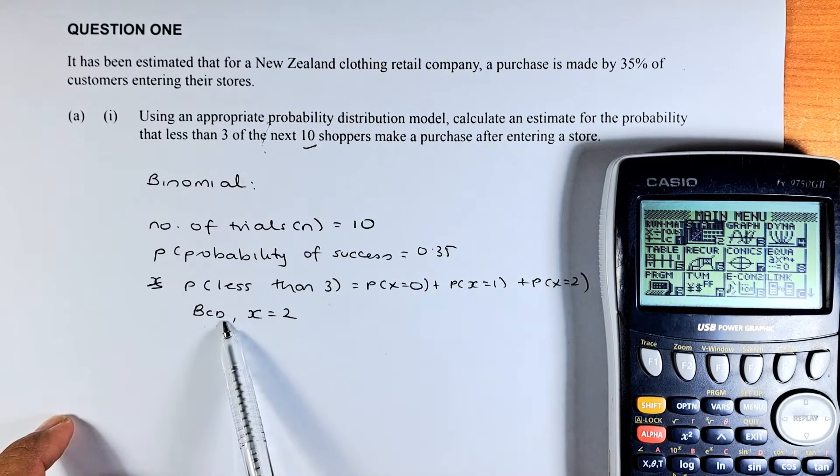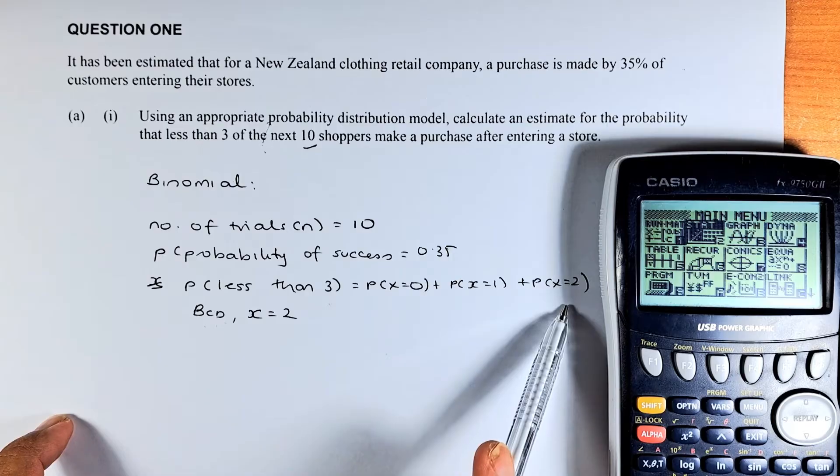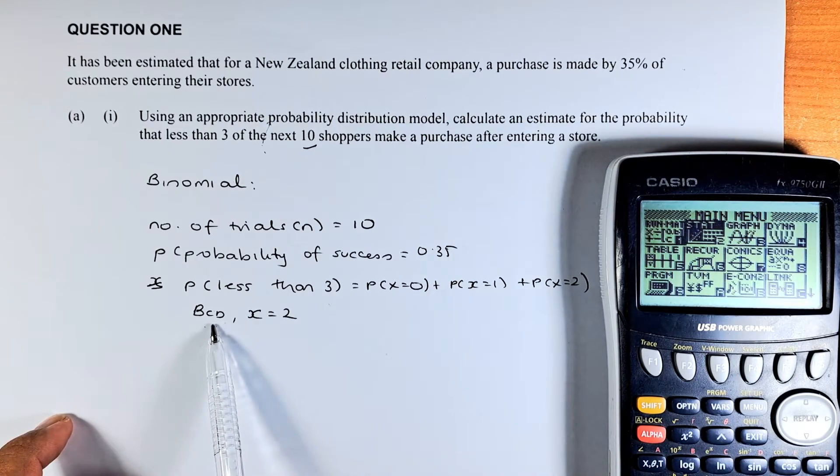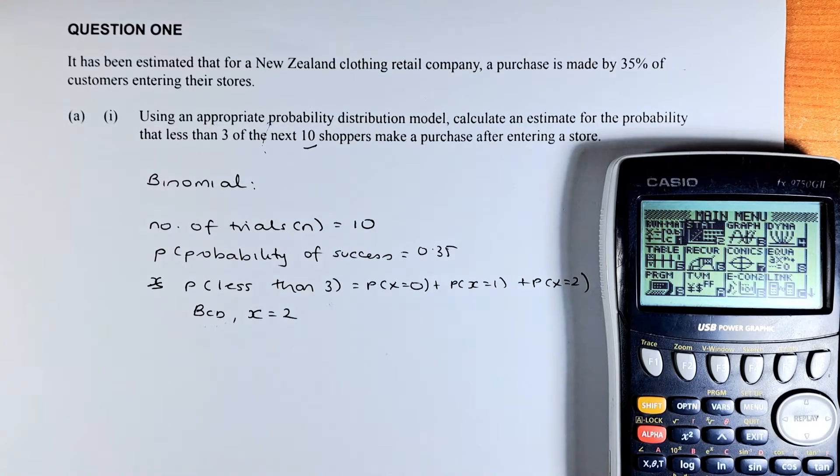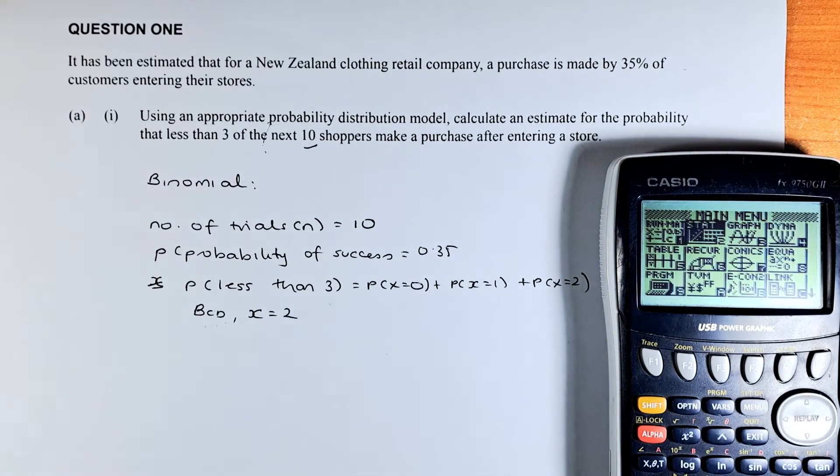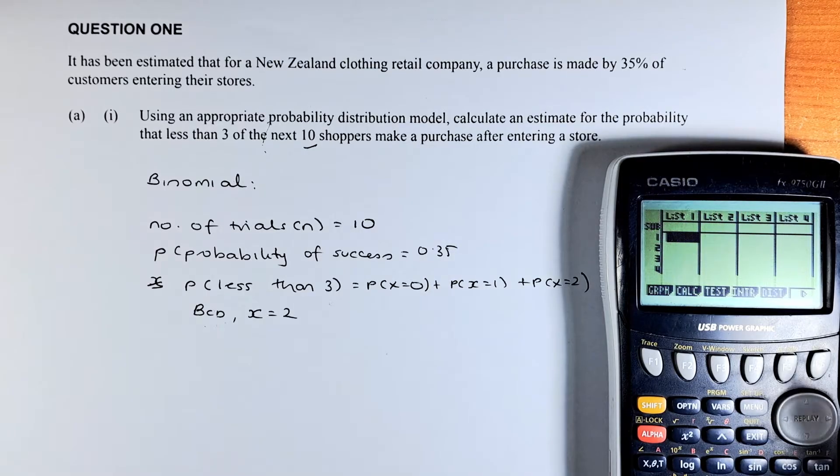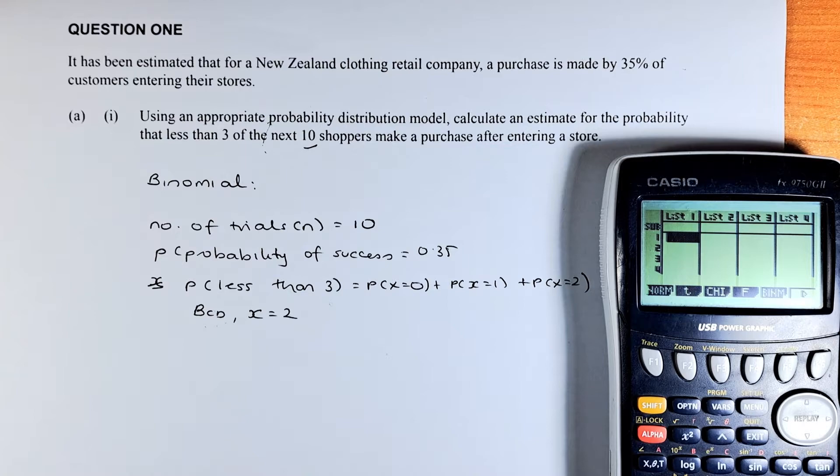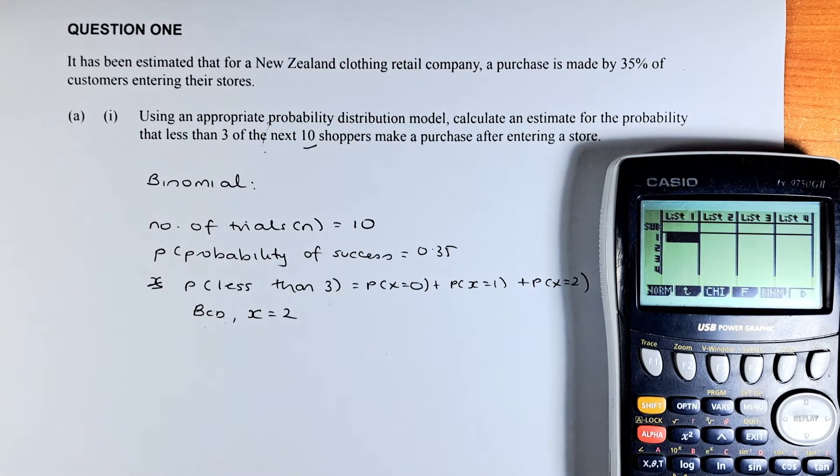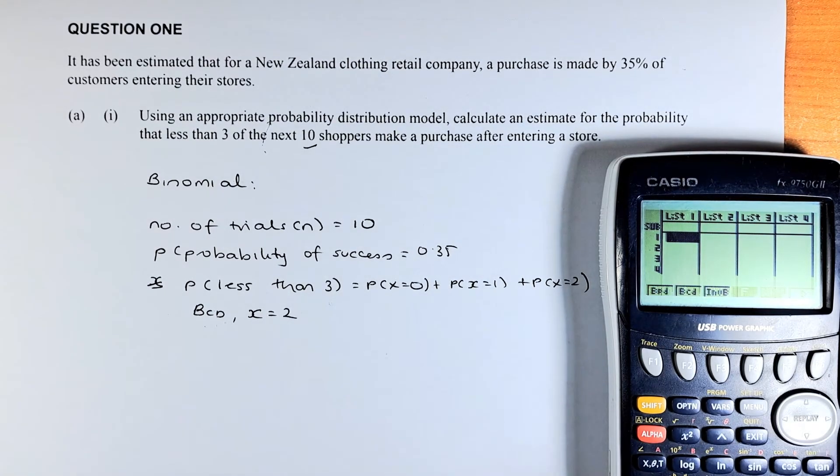So we need to do a BCD in our calculator when X equals to 2. The BCD means a cumulative from 0 to 2. So we are going to put X equals to 2. We go to statistics in the calculator, execute it. Then we go to distribution which is F5. And then we are going to do binomial, so we do another F5.